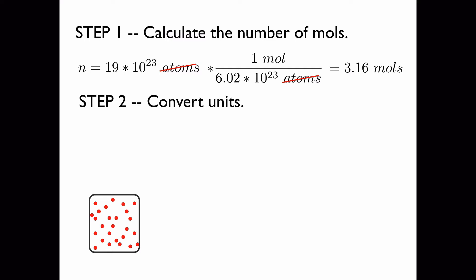Step 2 is to convert the units. We were given the volume and pressure in terms of atmospheres and liters but we need to convert them into Pascals and meters cubed. Two atmospheres is equal to 2 times 101 kilopascals because that's how many Pascals are in an atmosphere. So the pressure is 202 kilopascals.